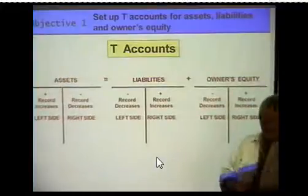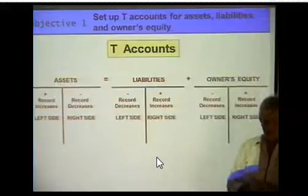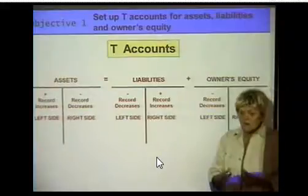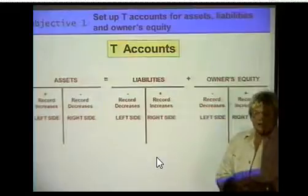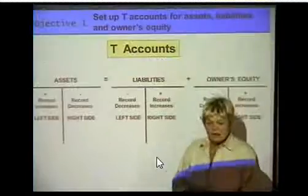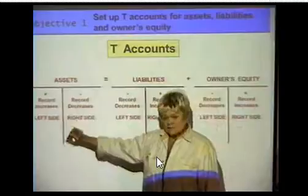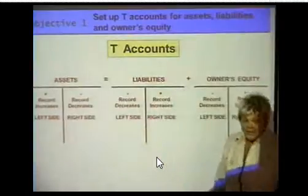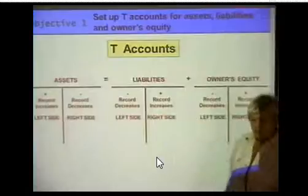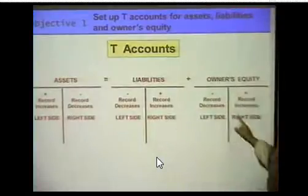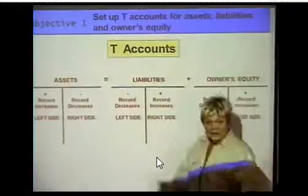Now the important thing to remember is, on every account, whichever side is the increase side, that is the side where the normal balance should appear — it will not be negative. The normal balance for any account is on the increase side. So on asset accounts, the normal balance should appear on the left side. In liability accounts and equity, the normal balance would appear on the right side, because that's the side that they increase on.